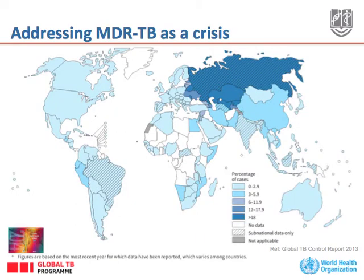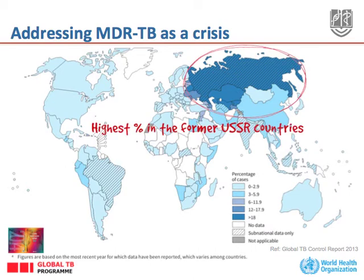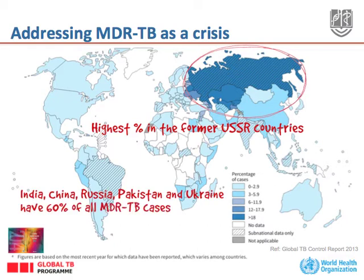Another important challenge is multi-drug-resistant TB. What needs to be done is to look at the highest percentage of cases in the former Soviet Union, and to the fact that five countries — India, China, Russia, Pakistan, and Ukraine — have 60% of all MDR-TB cases in the world. That is where the battle has to be won.